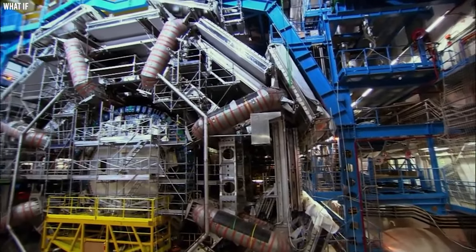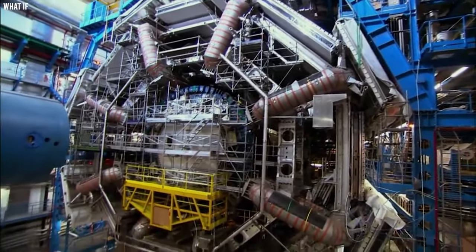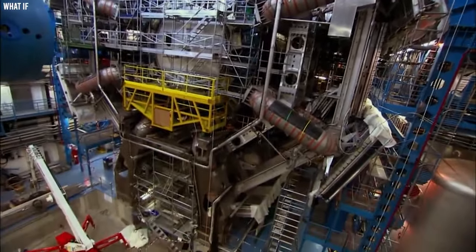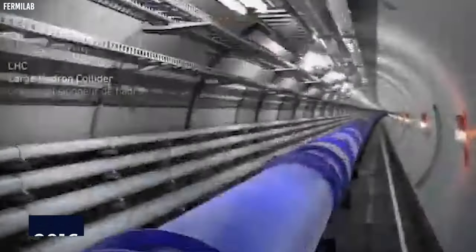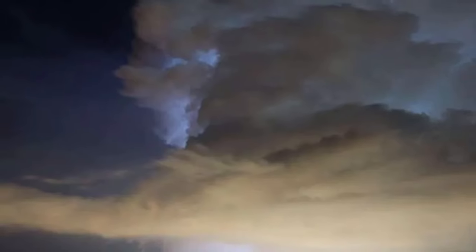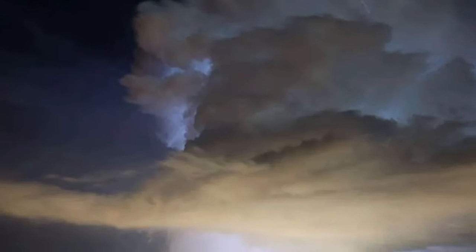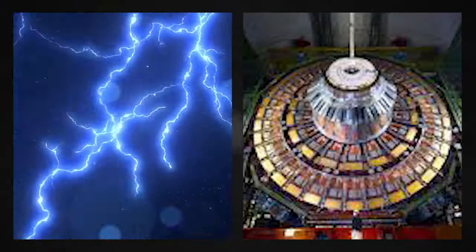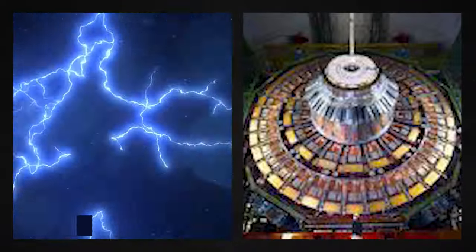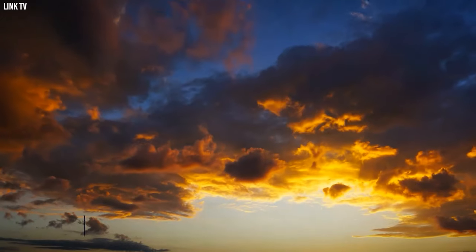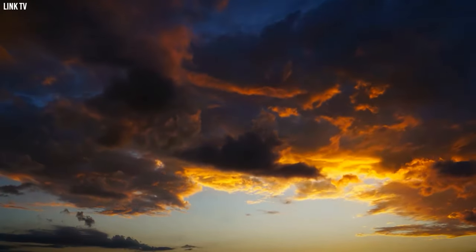One such never-before-seen enigma that stirred many to cast stones at CERN and call for a total shutdown was the incident of 2016. Back then, when the LHC was turned on, something strange and totally bizarre happened to the skies above the facility. Photographs of the clouds revealed an unusual cloud formation with strange electrical activity in the atmosphere above the CERN facility.